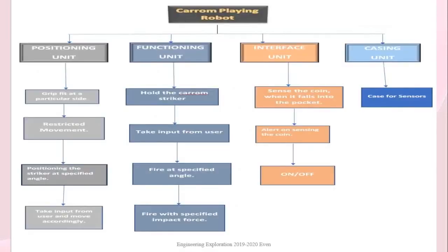Here is the functional clustering slide, where the Karam playing robot is divided into 4 units: positioning unit, functioning unit, interface unit, and casing unit. In the positioning unit, we grip and fit the device at a particular side, with restricted movement and positioning of the striker at a specified angle, taking inputs from the user. In the functioning unit, we hold the Karam striker, take user inputs, fire at the specified angle, and fire with specified impact force. In the interface unit, when a coin falls into the pocket, it sends an alert. In the casing unit, it provides a case for sensors.